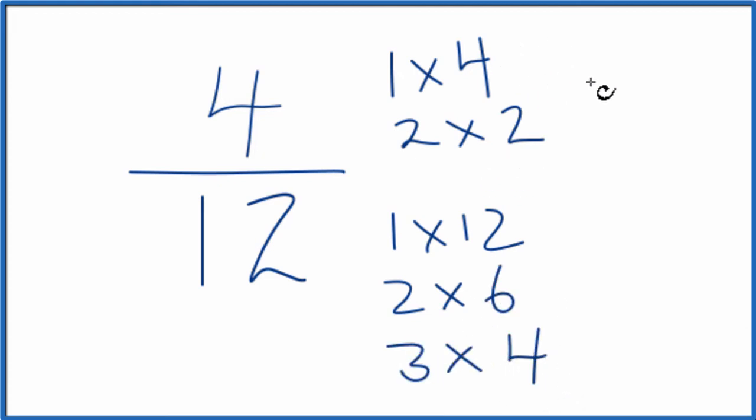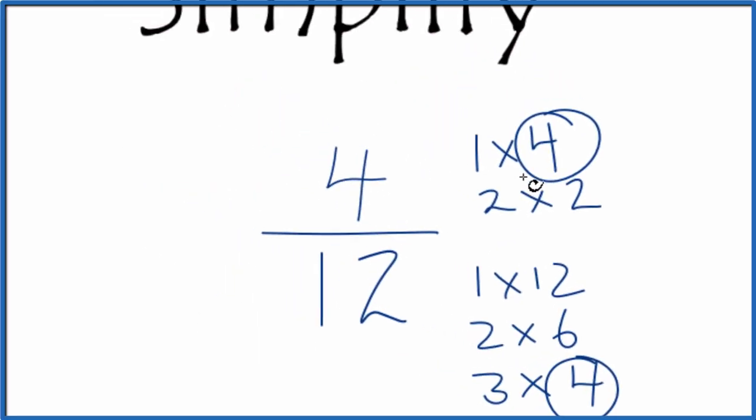So the greatest common factor here for 4 twelfths is going to be 4. So we can divide the numerator by 4, denominator by 4, and we'll have simplified our fraction.